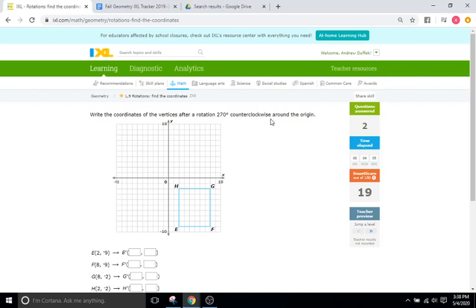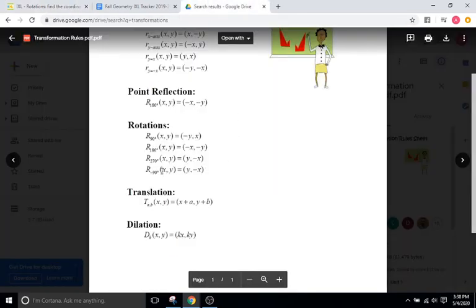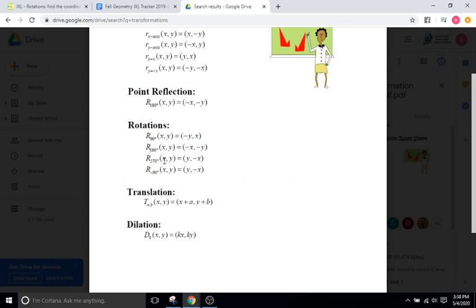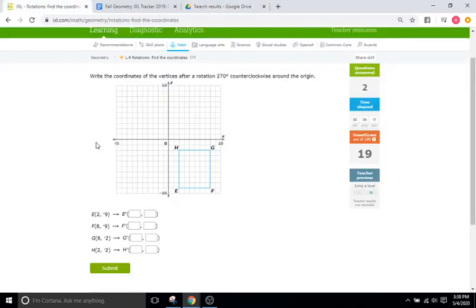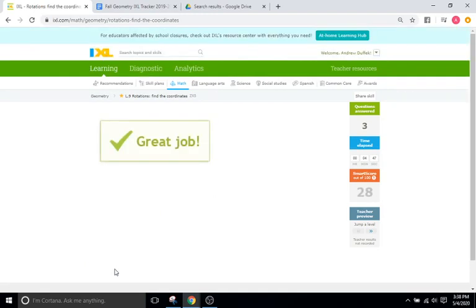Cool. 270 degrees counterclockwise. We go down to our rules here. 270 degrees counterclockwise. We switch the x and the y. It becomes y and x. And then we flip the sign of the x. So we'll go back. So 2 comma negative 9 becomes negative 9 comma negative 2 because we are flipping that sign of the x coordinate. Positive 8 comma negative 9 becomes negative 9 comma negative 8. Positive 8 comma negative 2 becomes negative 2 comma negative 8. And then 2 comma negative 2 will become negative 2 comma negative 2. Great.